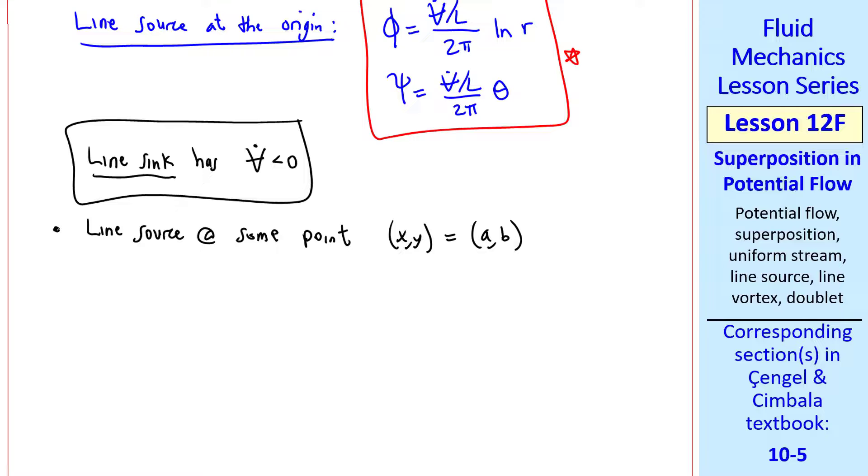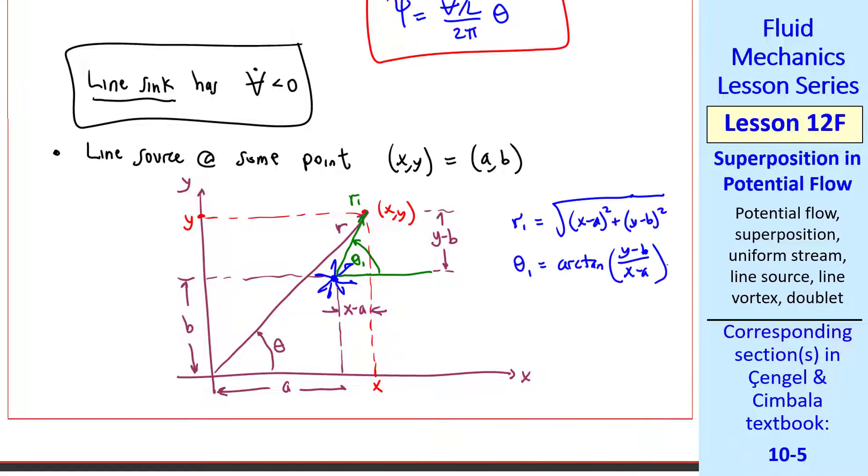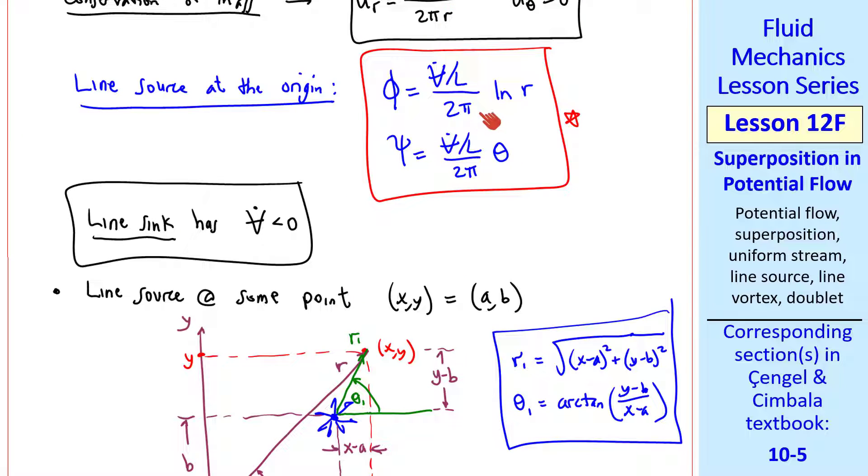What about if we have a line source at some point, x, y equal a, b? I'll sketch that here, where the x location is a, and the y location is b. And suppose we're interested in calculating the flow at some point, x, y, or r theta. To analyze the flow here, we have to shift the origin, defining some other theta, theta 1, from the source to our point, and r1 from the source to the point. This vertical distance is y minus b, and this horizontal distance is x minus a. A little trig gives us r1 and theta 1 in terms of x, y, and a, and b.